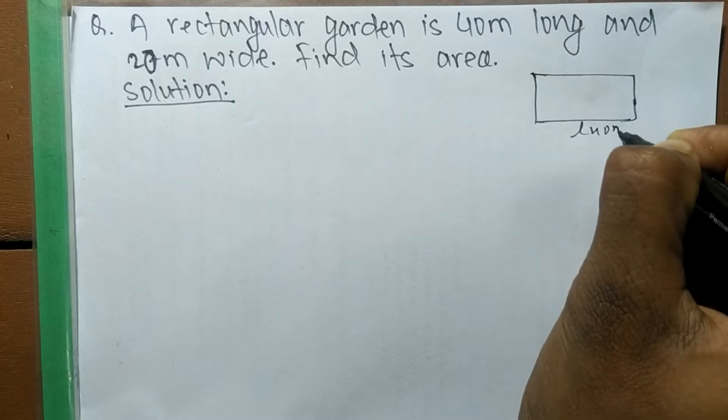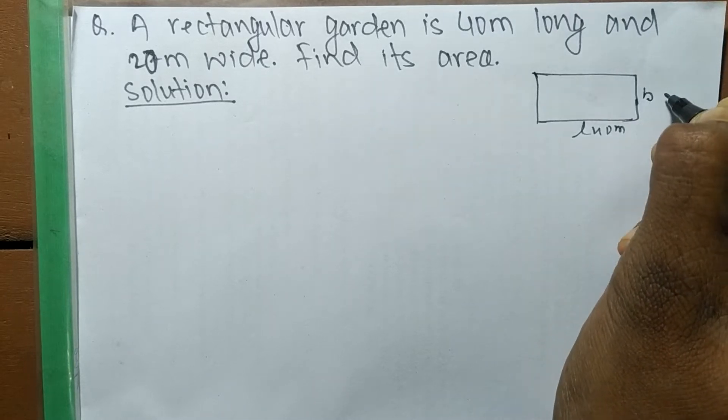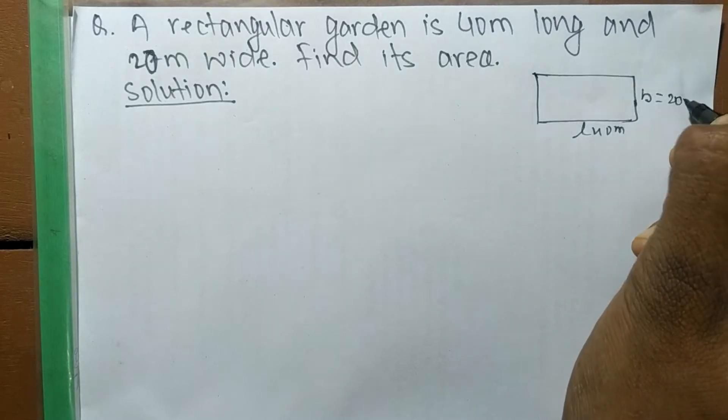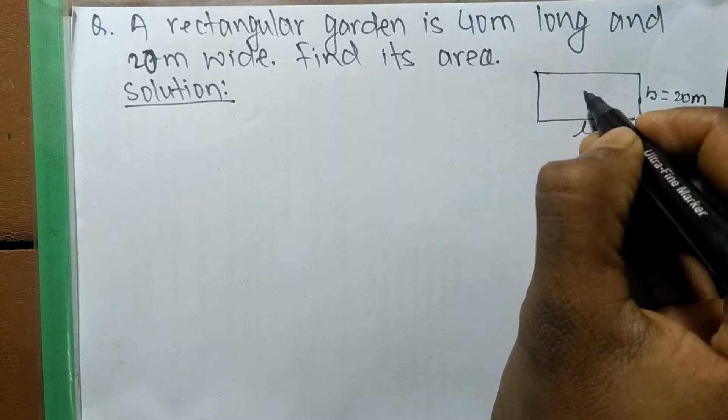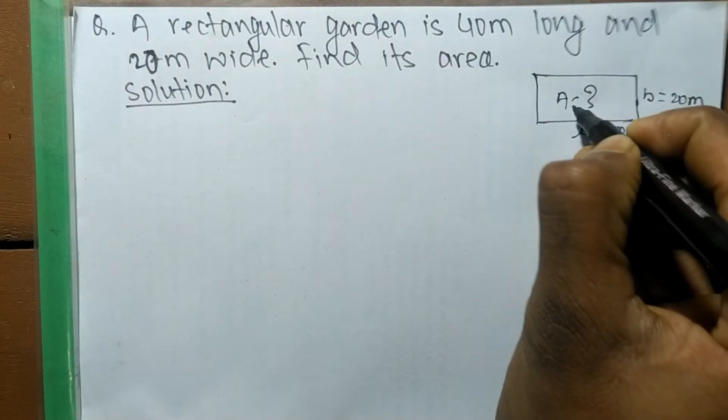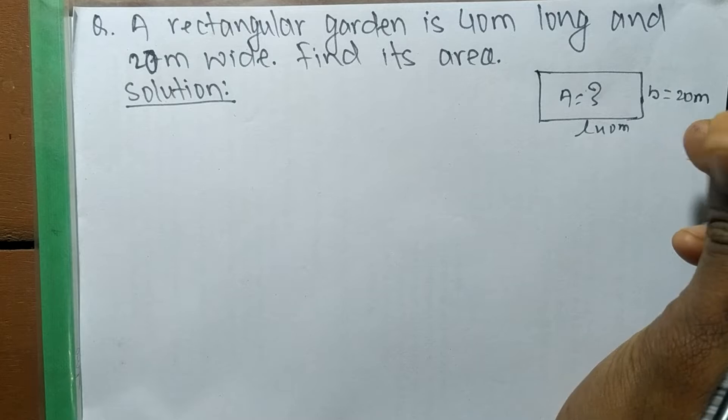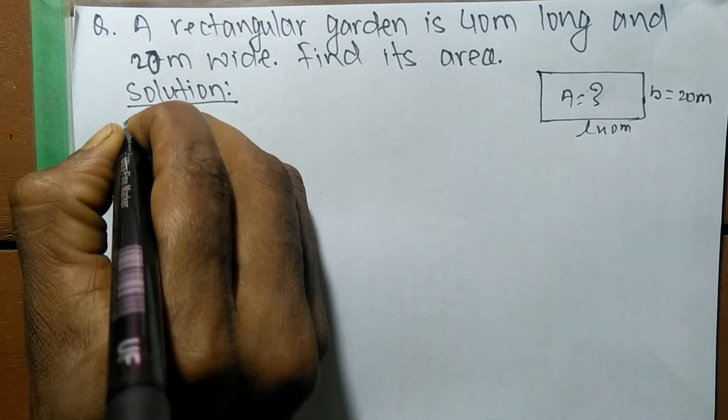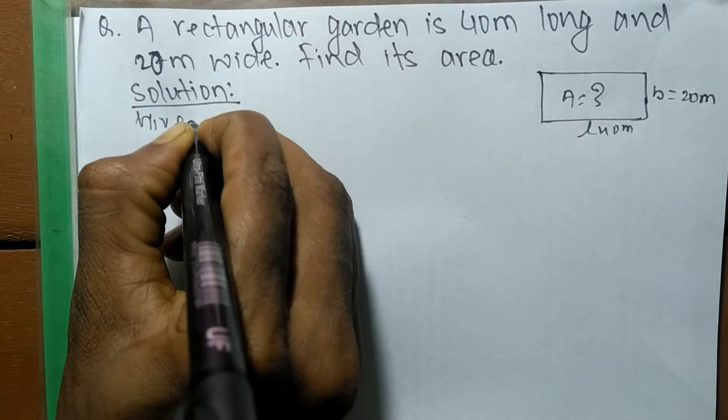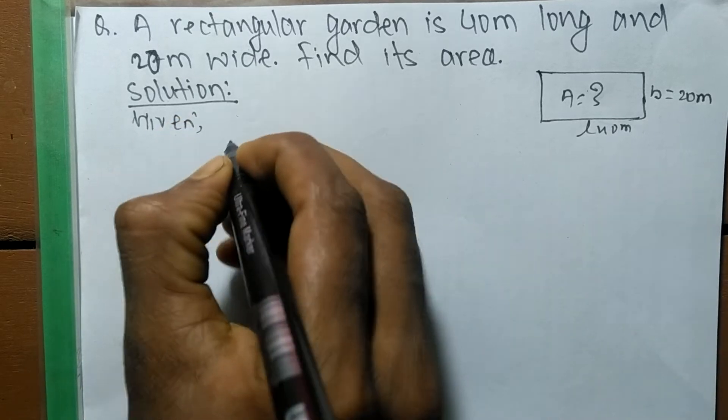So here is a rectangular garden whose length is 40 meter and breadth is 20 meter, and we have to find out its area. To solve it, first of all we have to write what are the given quantities here.